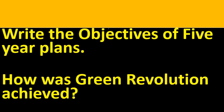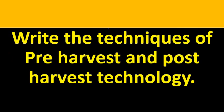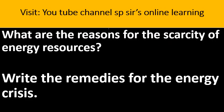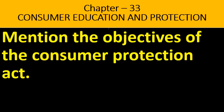Write the objectives of the 5-Year Plans. How was the Green Revolution achieved? Write the techniques of pre-harvest and post-harvest technology. Write the reasons for the scarcity of energy resources — write twice. Write the remedies for the energy crisis in India. Mention the objectives of the Consumer Protection Act.